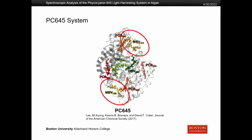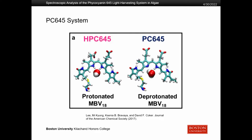Specifically in my research, I want to focus in on the MBV chromophores. This is a zoomed in picture, and there are actually two different versions of the MBV chromophore that we looked at. The difference is very small — it's this little white part here, which is a hydrogen. They only differ in either the addition of a hydrogen in the HPC645 system or the removal of a hydrogen in the PC645 system. Both of these actually occur naturally in nature. These systems are surrounded by water, and whether that water acts as a hydrogen donor or acceptor, you can get both versions of these systems occurring. With modeling, we can just tell the computer to add or remove a hydrogen.